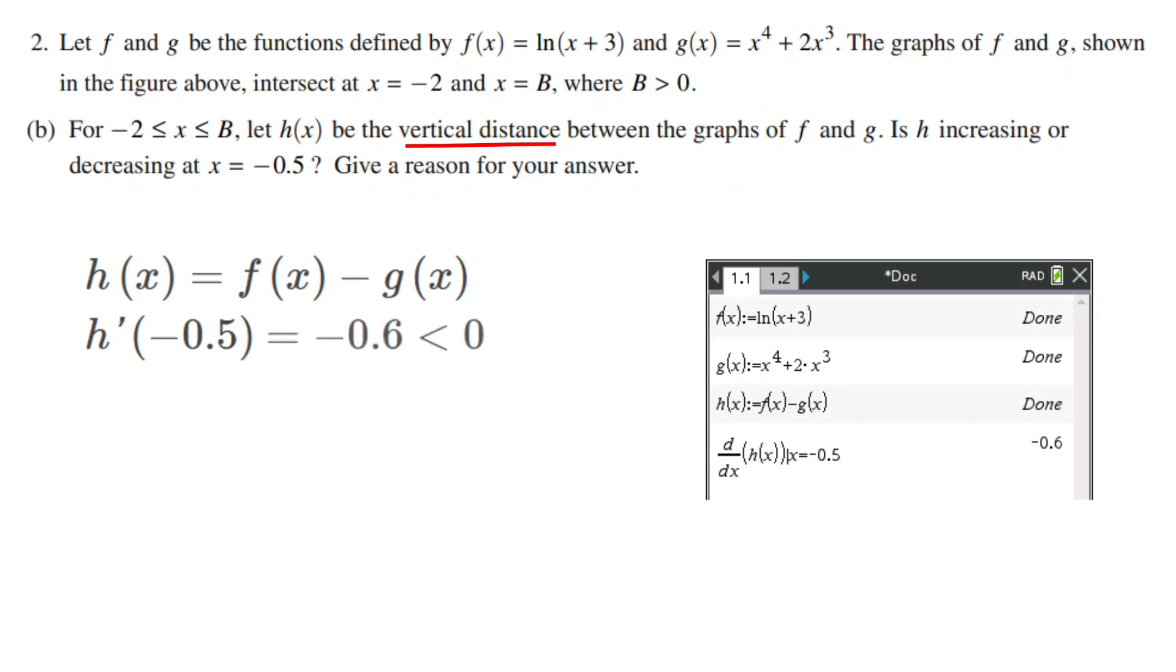Since this number is negative, h is decreasing. We can write this in a statement by saying something like, h is decreasing at x equals -0.5 because h'(-0.5) is less than 0.